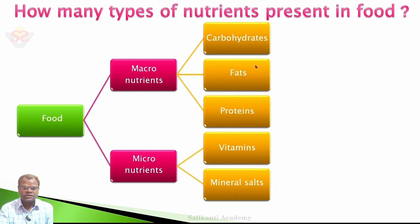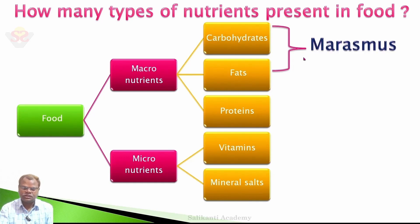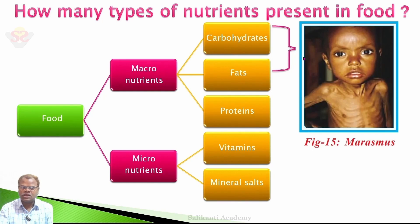Carbohydrates and fats are also called calorific nutrients. The lack of calorific nutrients in diet causes marasmus in children. The characteristics of marasmus: these children are very restless and look very weak. Their ribcage also appears.